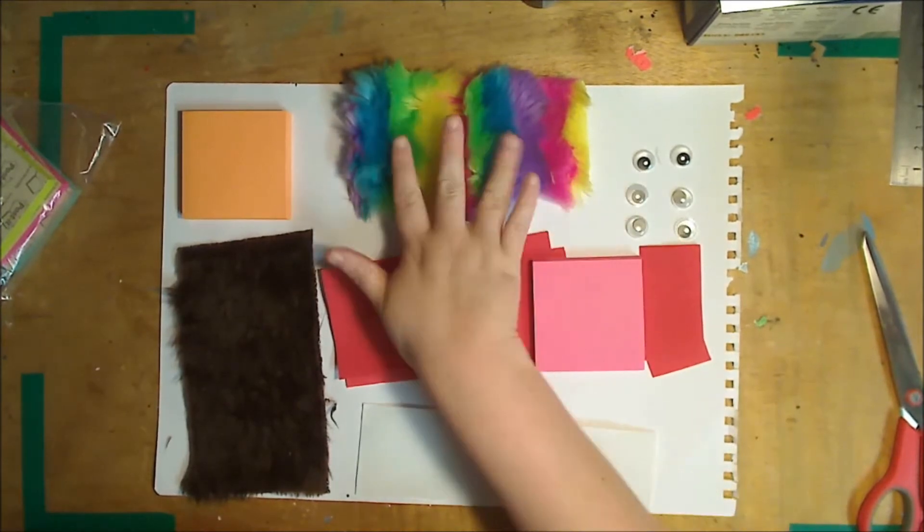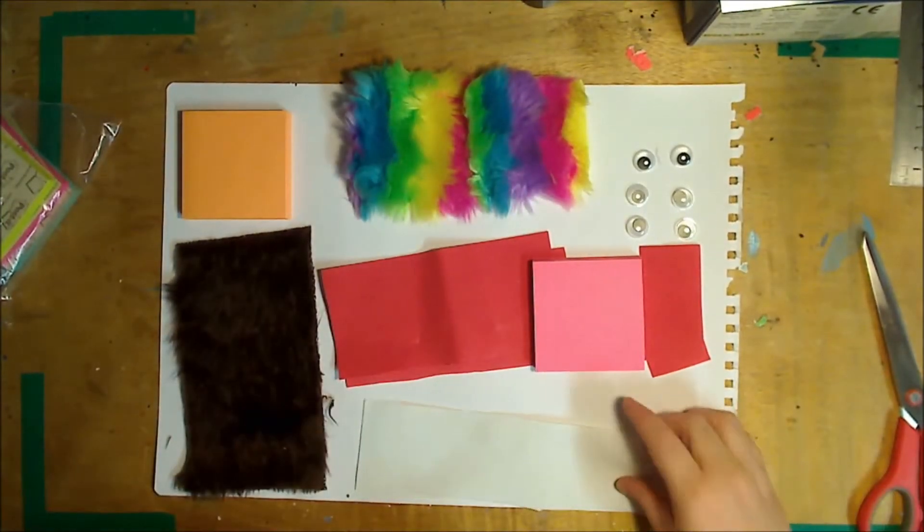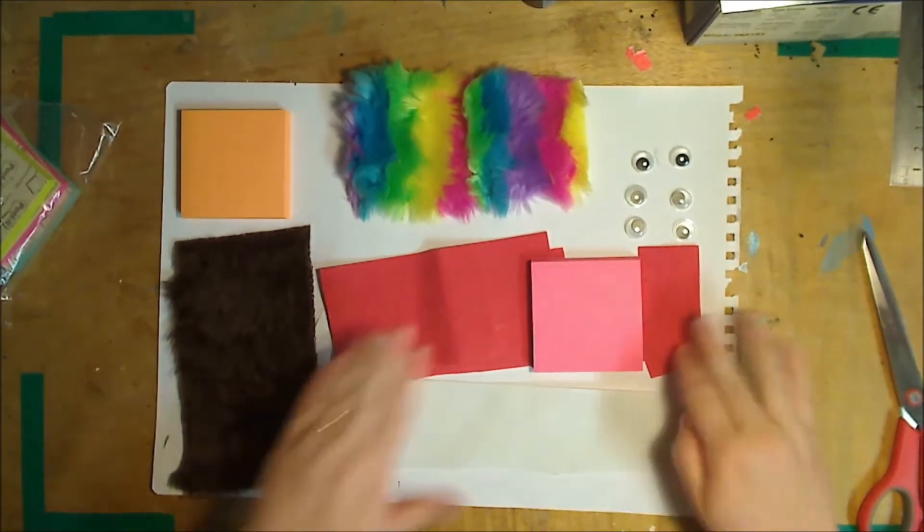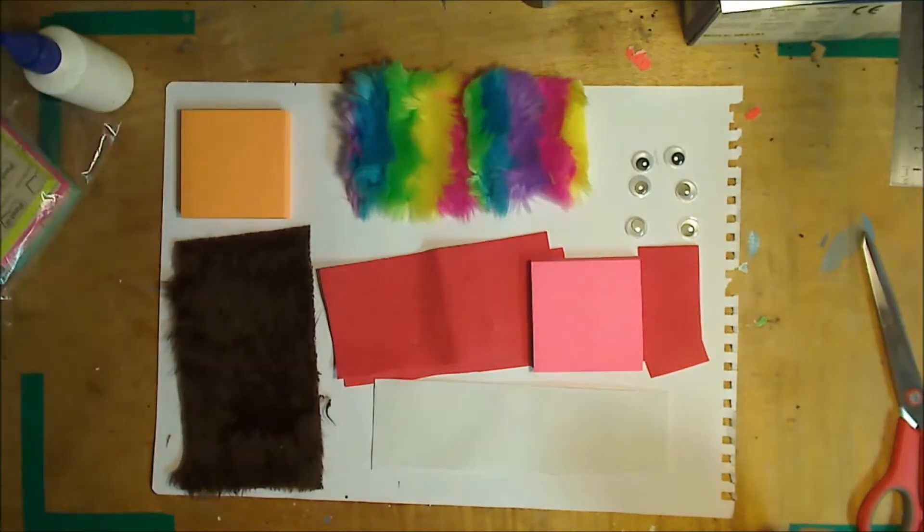So for this you're going to need some fur. I've got some rainbow one and just a plain brown one as well as some foam sheets. You can also use felt and some googly eyes and obviously glue and double-sided tape.